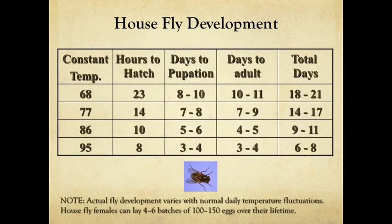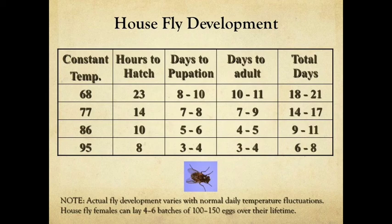How long does it take a house fly to develop? This is important when thinking about management. House flies are cold-blooded animals — the cooler the temperatures, the longer it takes to go from egg to adult. At an average temperature of 68°F, it takes about 18 to 21 days. At warmer summertime temperatures of 77 or 86°F, this generation could take as few as 9 to 11 days. The stable fly takes three weeks compared to the house fly's development, so house flies can develop much larger populations in a shorter time.